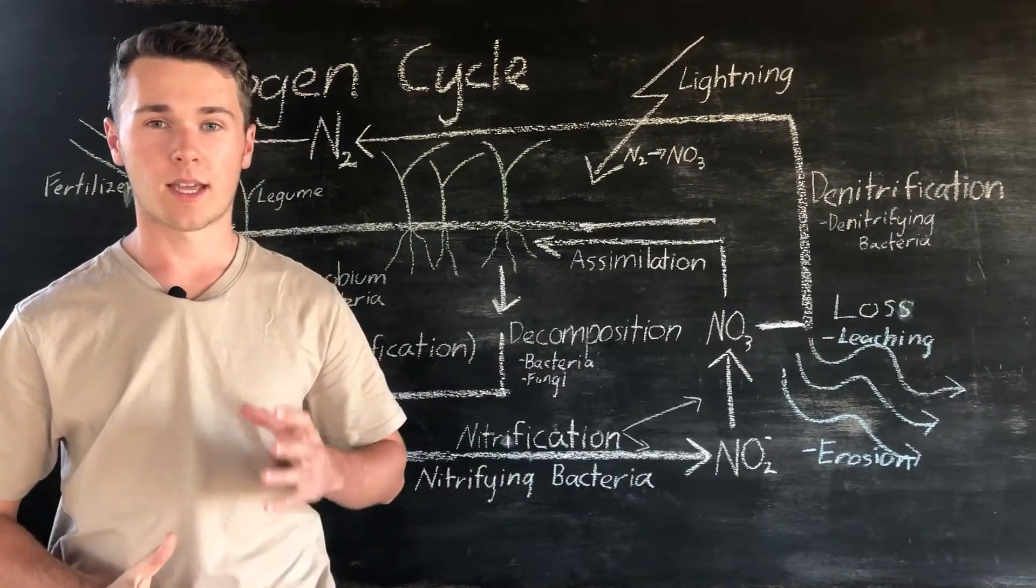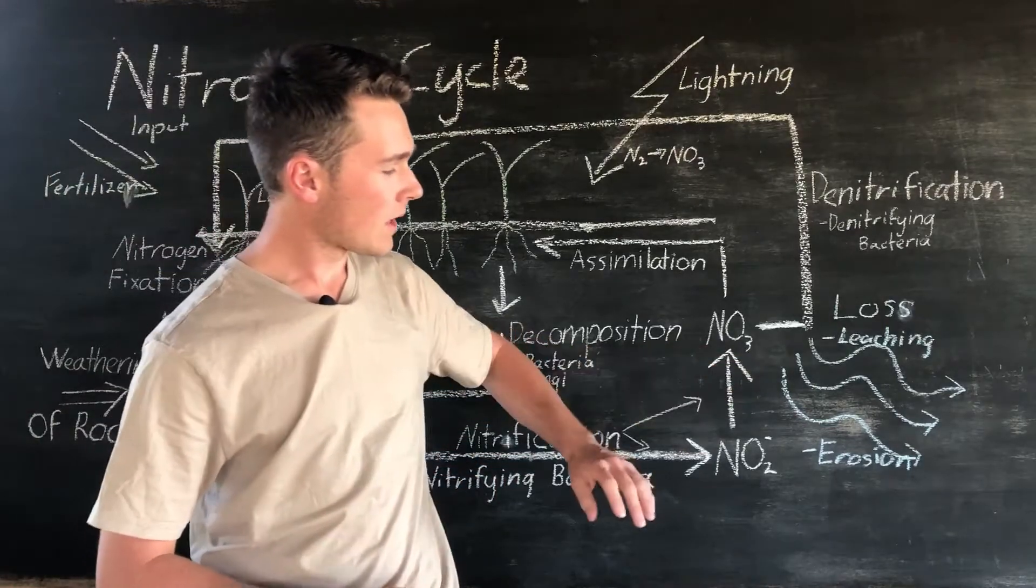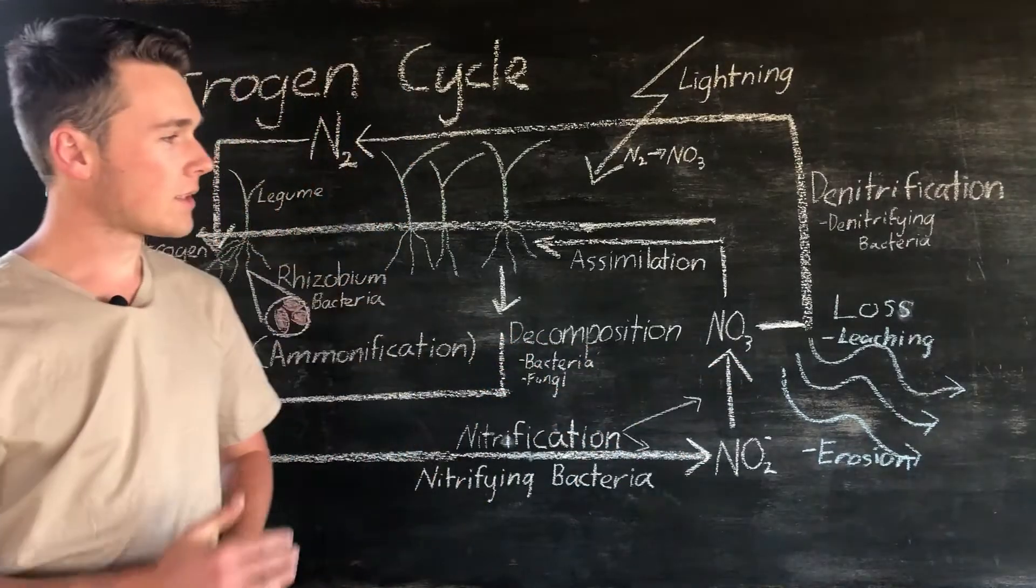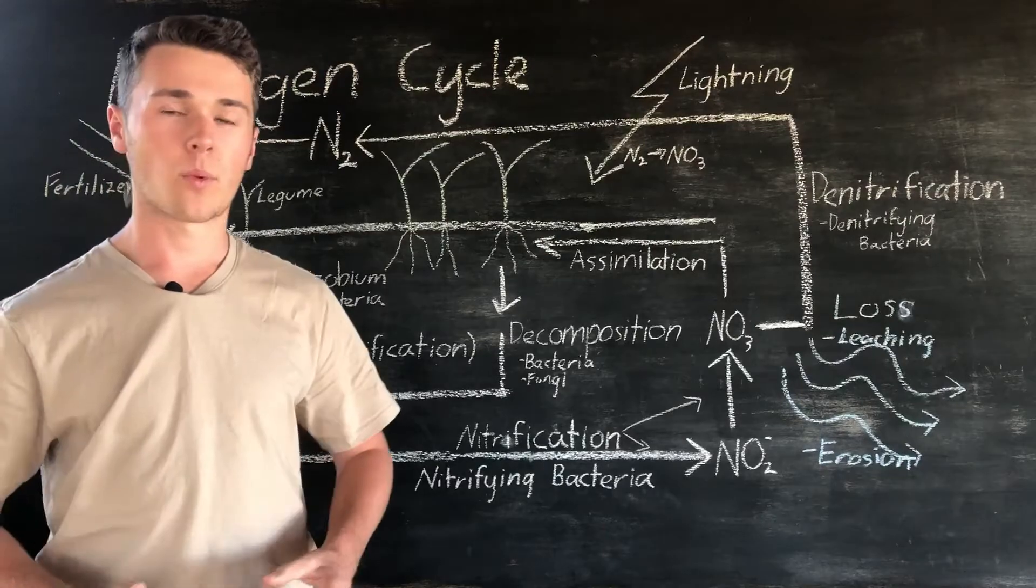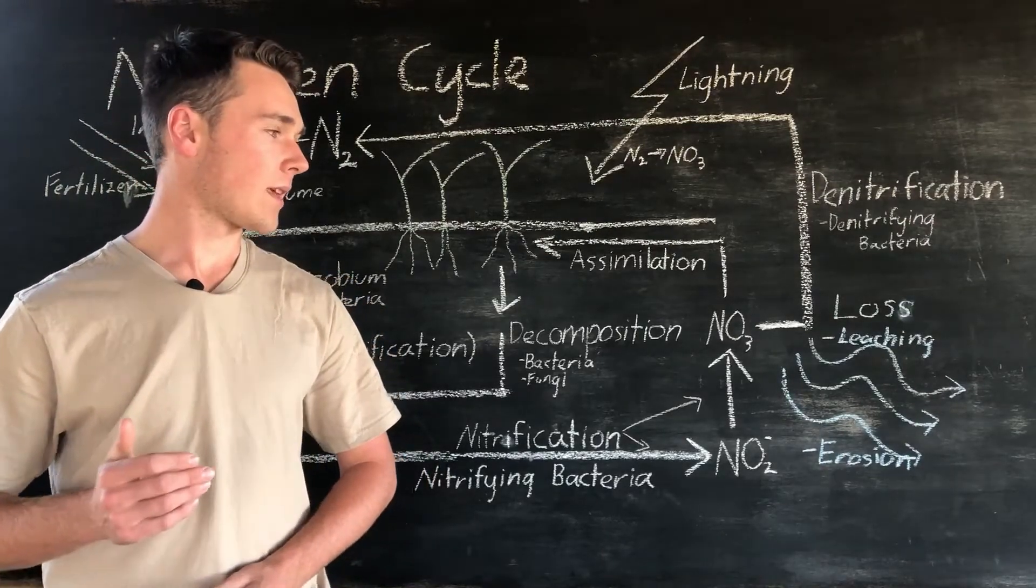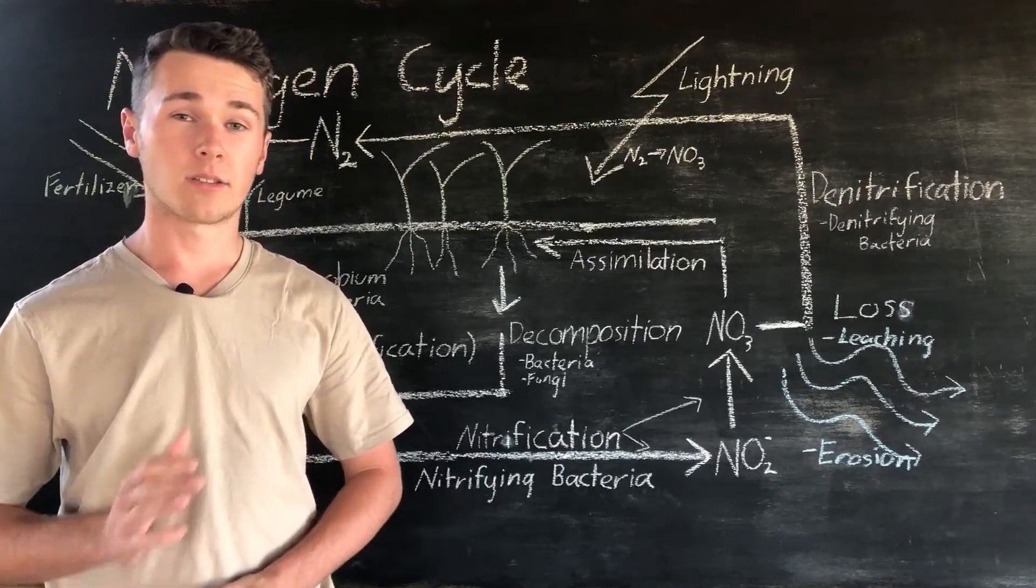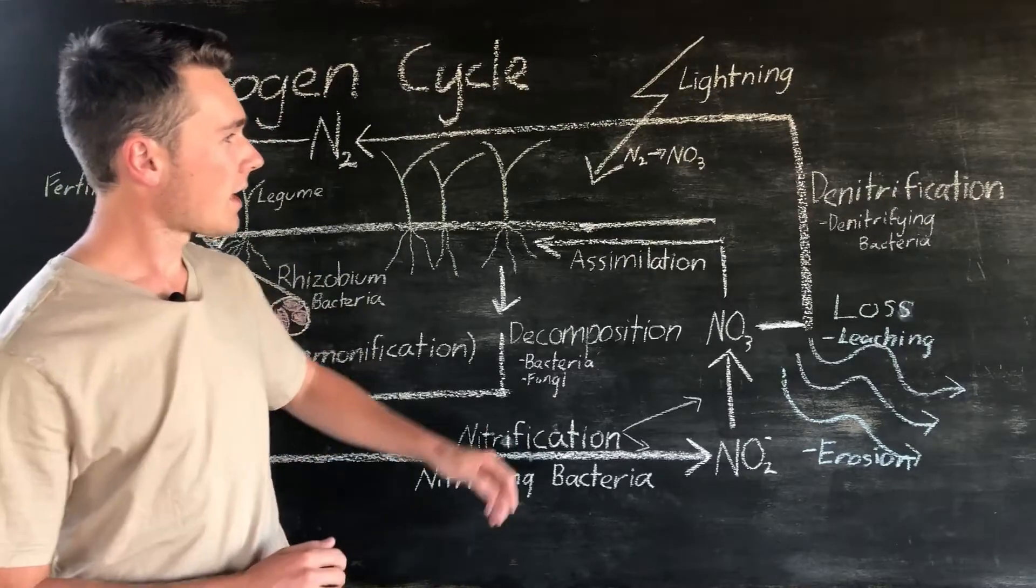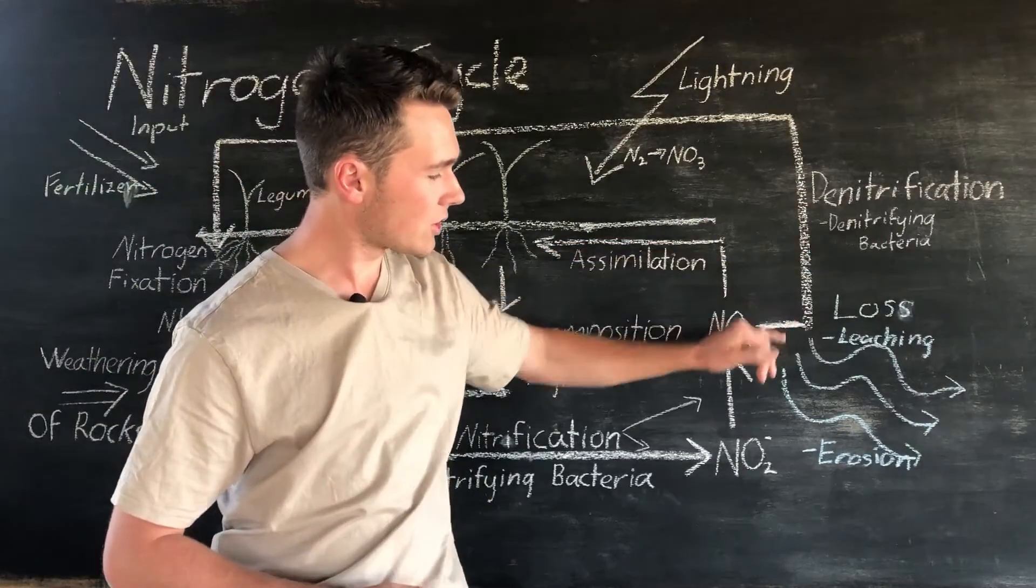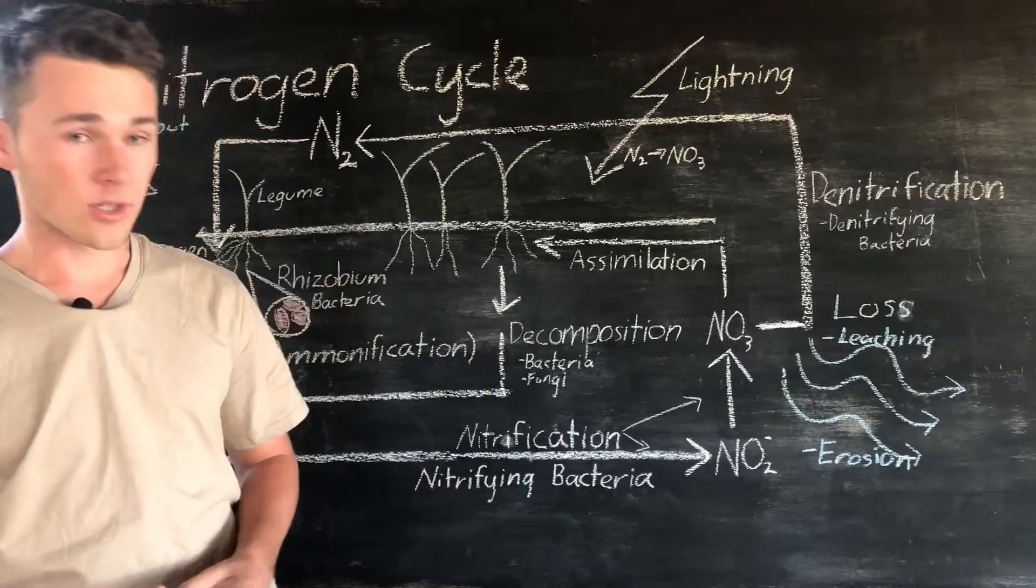Another way that we can lose nitrogen from our system is through leaching and erosion. This can occur a number of different ways but pretty much loss of soil from the system and excess watering will cause leaching. So those are three ways that you can lose nitrogen: denitrification, leaching and erosion. But there's a couple other ways we can gain nitrogen.